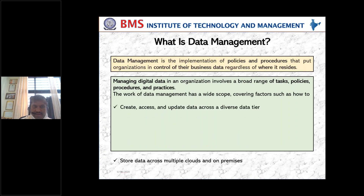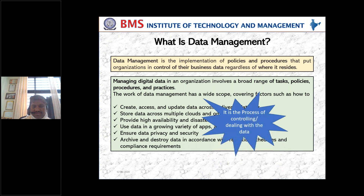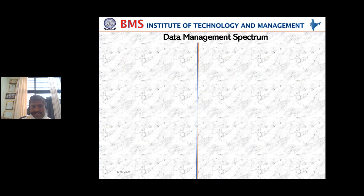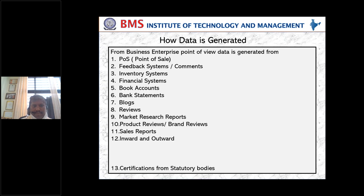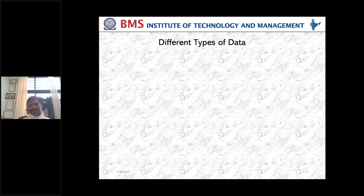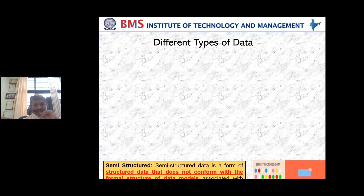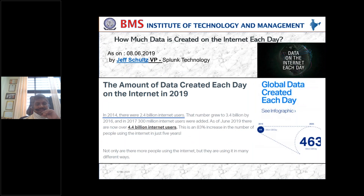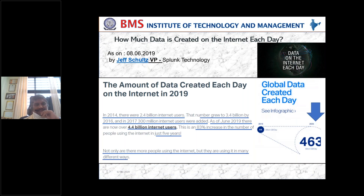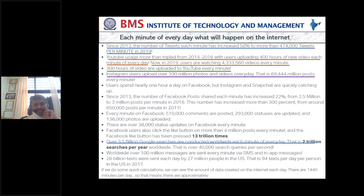We have seen data management tools, which are of six basic categories, and job titles related to data management and data management job descriptions — how we want to elevate our student community to take these kinds of jobs in today's market. So I'll just scroll down and walk through my slides. This is the spectrum of data management, this is how data is generated from a lot of systems in the business — data generation in the business ecosystem, different types of data: structured, unstructured, semi-structured, and metadata. We've also seen what happens each minute on the internet and the number of 4.4 billion internet users.